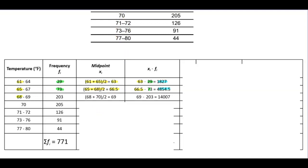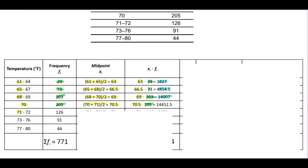For the class with lower class limits of 68 and 70: 68 plus 70 divided by 2 gives us a midpoint of 69. Multiplying 69 by the frequency of 203 gives a total of 14,007. Next, the lower class limits are 70 and 71: 70 plus 71 divided by 2 gives us 70.5. Multiplying 70.5 by the frequency of 205 gives us 14,452.5.